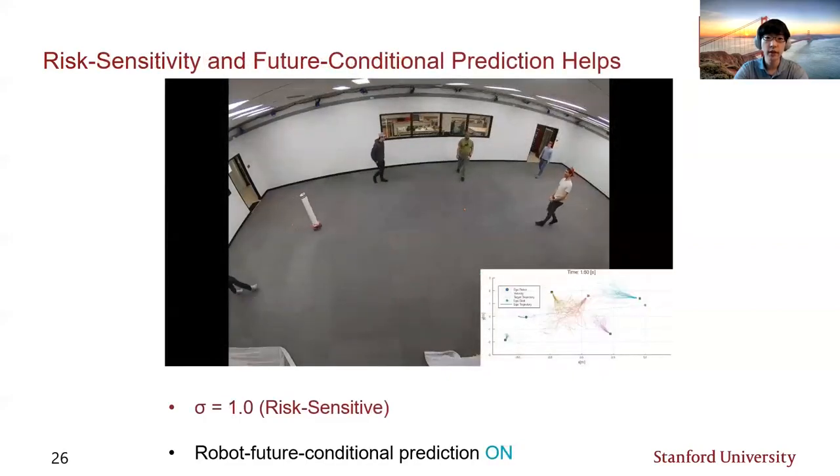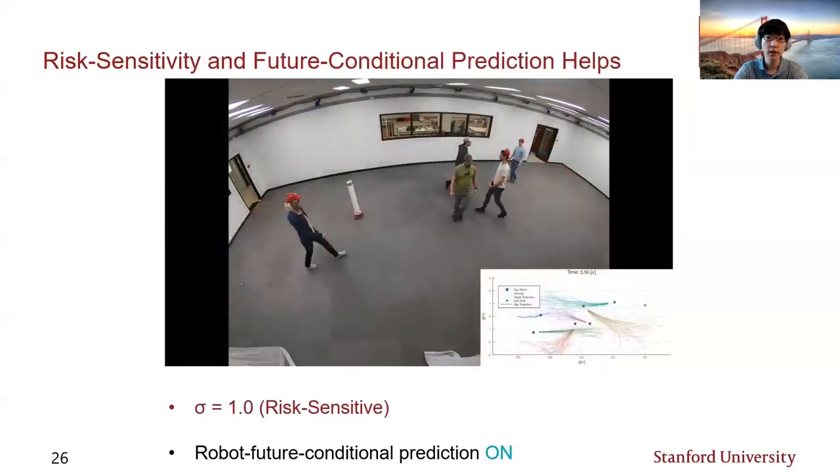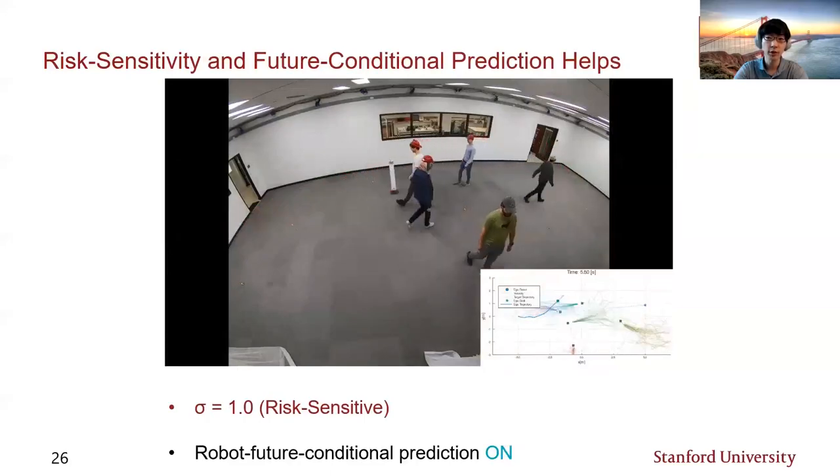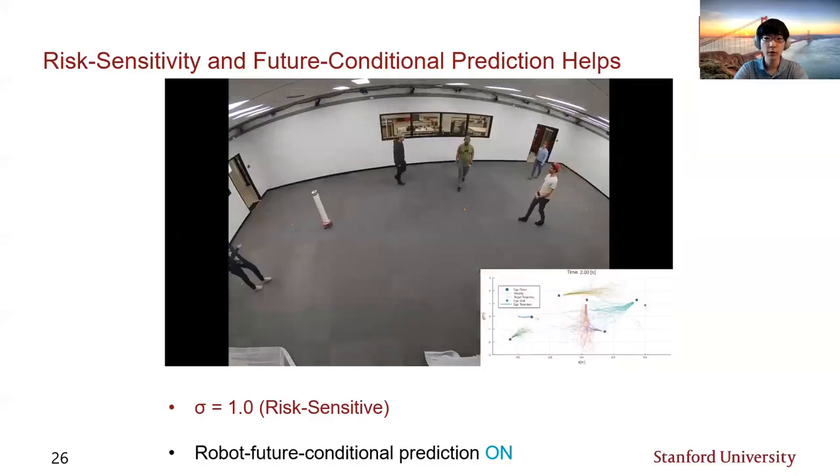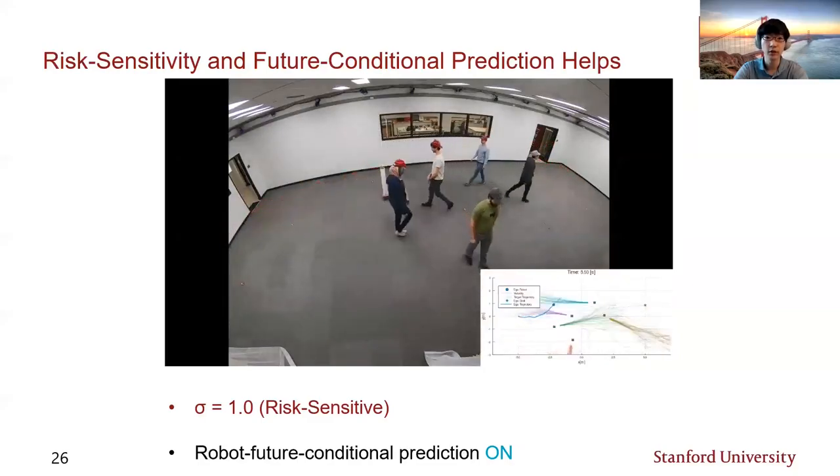On the other hand, increasing risk sensitivity and using robot future conditional prediction resulted in much smoother interactions between the robot and the humans throughout multiple episodes. An example is shown in this video, where the robot found a way around the humans quickly and avoided collisions.